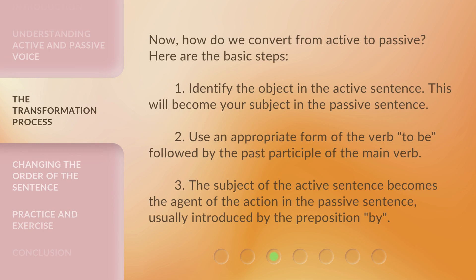Now, how do we convert from active to passive? Here are the basic steps. First, identify the object in the active sentence — this will become your subject in the passive sentence. Second, use an appropriate form of the verb 'to be' followed by the past participle of the main verb. Third, the subject of the active sentence becomes the agent of the action in the passive sentence, usually introduced by the preposition 'by.'